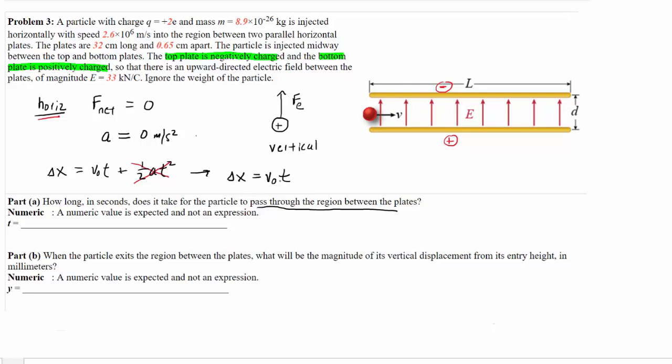So what we would do is we would divide both sides of it by the initial velocity so that it cancels out on the right-hand side. And we can see that the time in the horizontal direction would be the displacement in the horizontal direction divided by the initial velocity in the horizontal direction. Now, the displacement in the horizontal direction is represented in the picture by L, and that was given to us as being 32 centimeters, or 0.32 meters. So we can plug that in for the horizontal displacement.